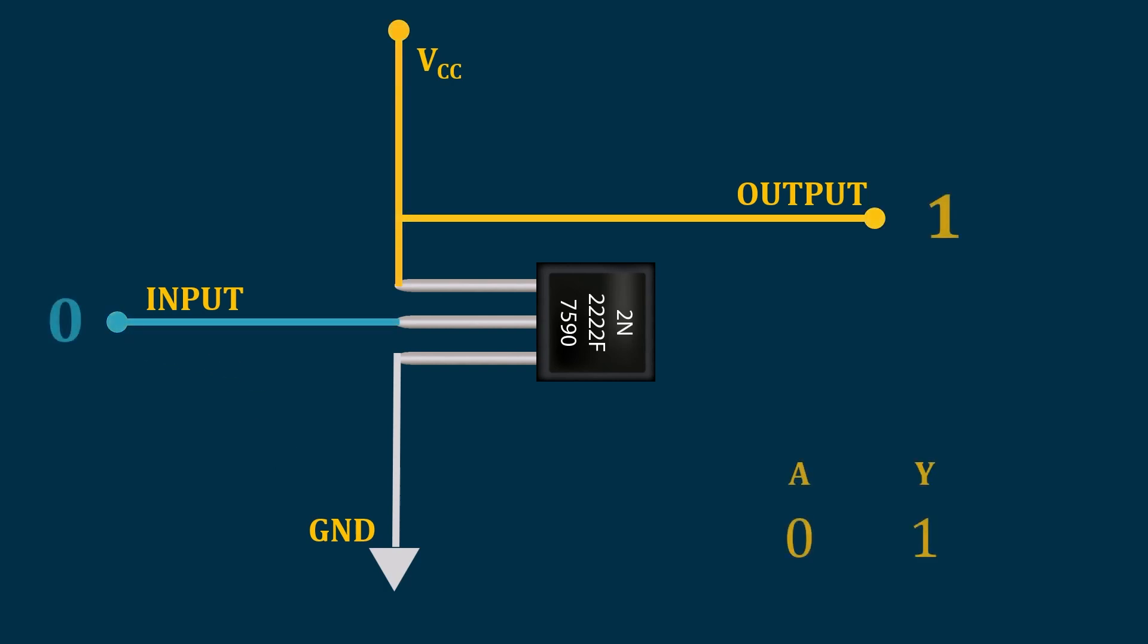When we give 0 in input, what happens? Here it is VCC. This transistor works as a switch, and because we are giving 0 in input it will not turn on, and whatever supply we are getting will get it in output, and that is why we get 1 in output.